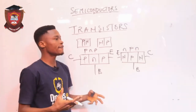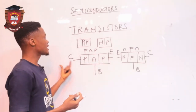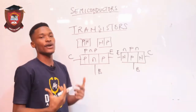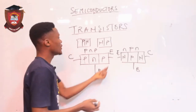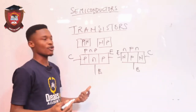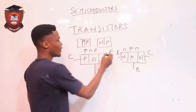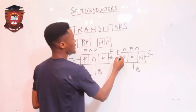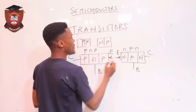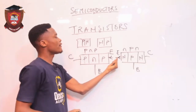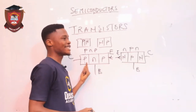How do we identify the emitter and the collector? There is a way you can separate them in a circuit diagram. The emitter always carries an arrow — anyone that carries the arrow is the emitter. For this one, my arrow is pointing outwards; for this one, my arrow is pointing inwards.